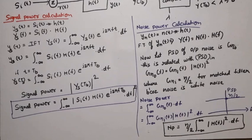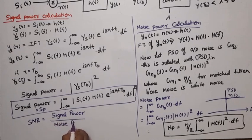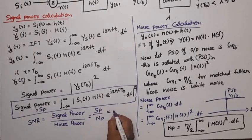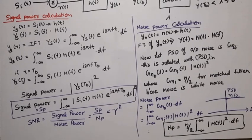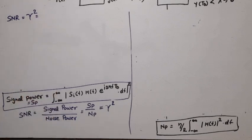Now we want SNR. SNR = signal power divided by noise power. SNR = γ² = SP / NP. Here γ is called the figure of merit, which is the ratio of signal voltage to noise voltage. So SNR = signal power divided by noise power.